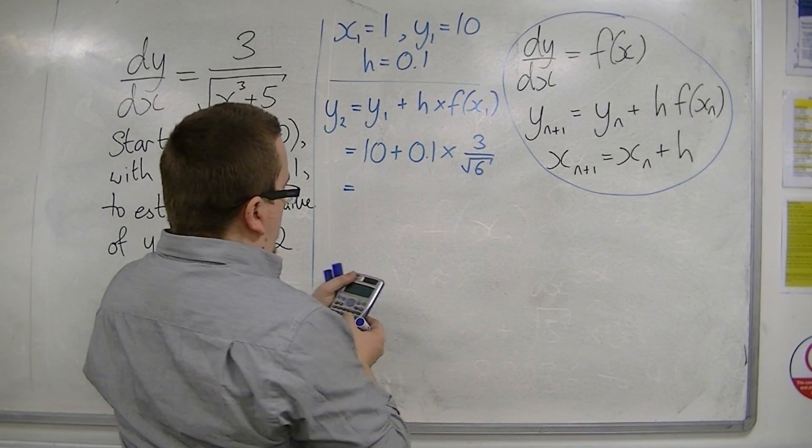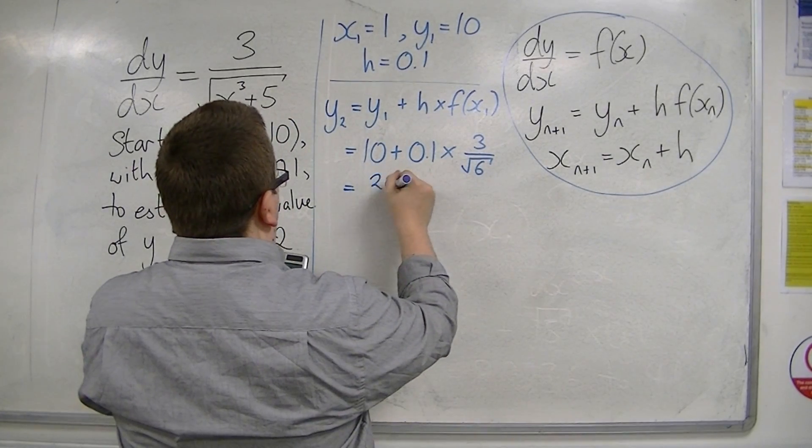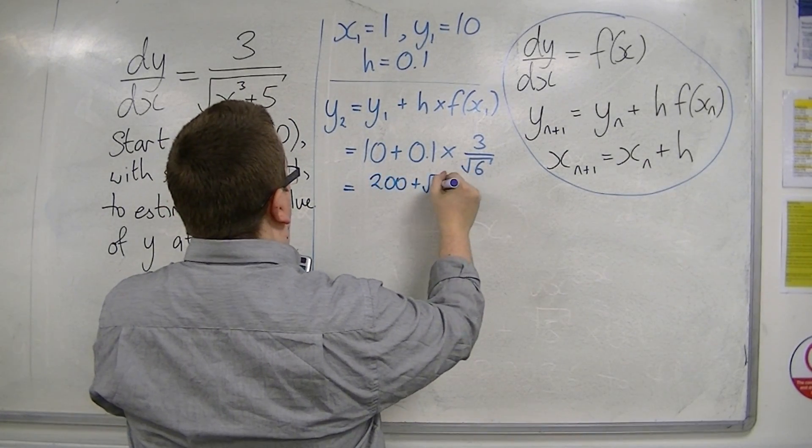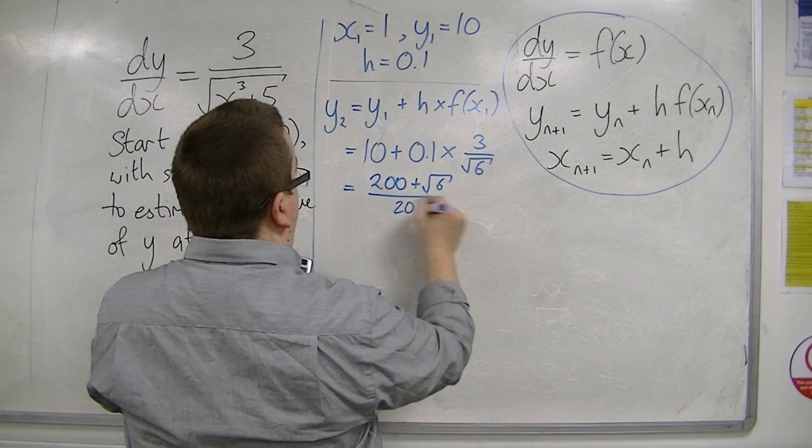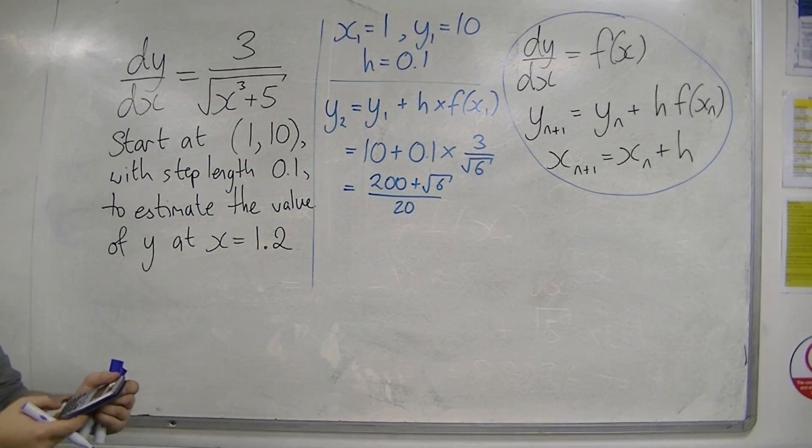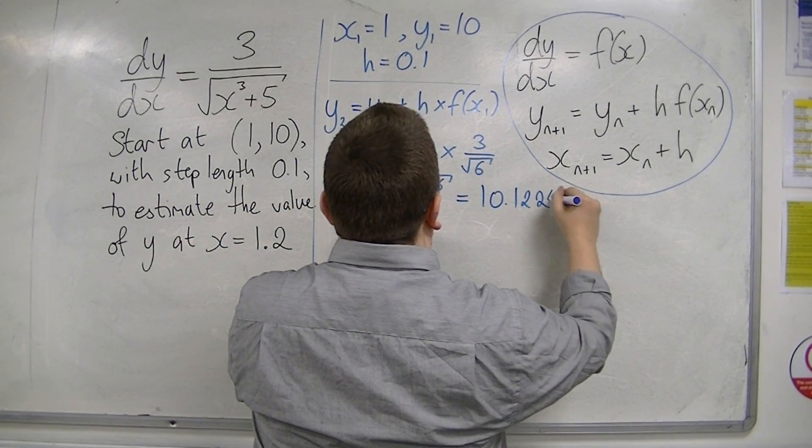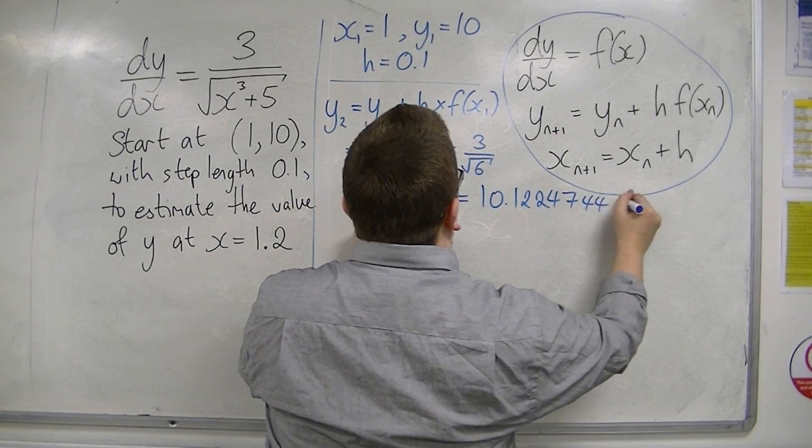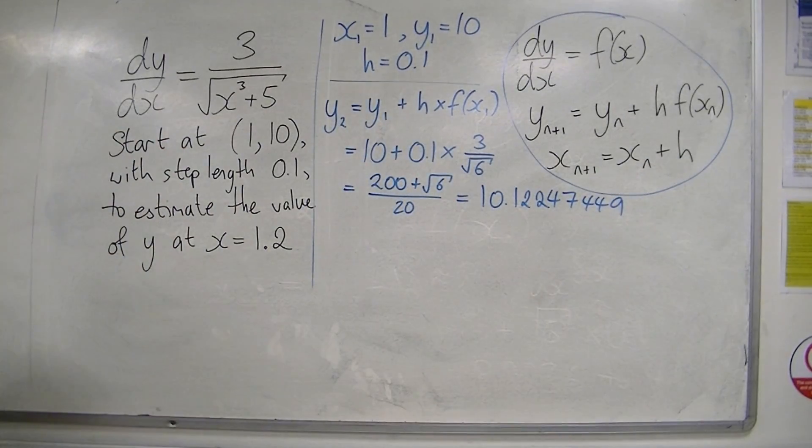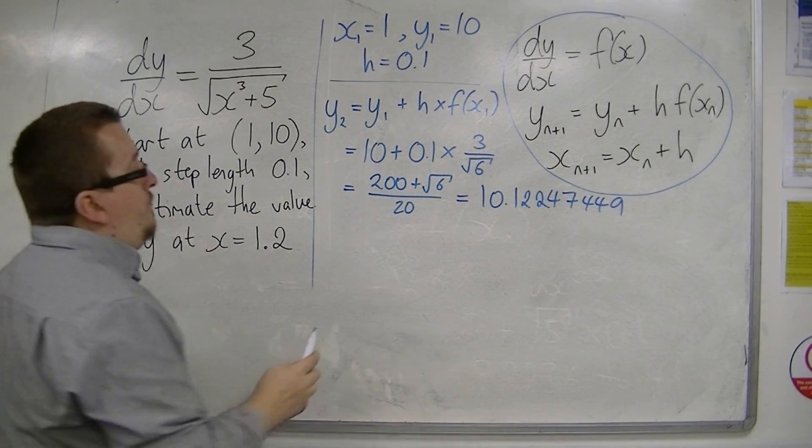And that gets me exactly (200 + √6)/20. That's what the calculator has put it to, which is equal to 10.12247449. That's the full calculator display.